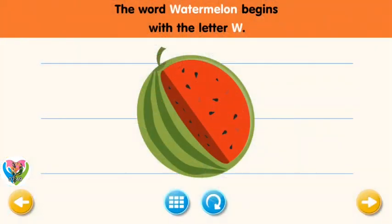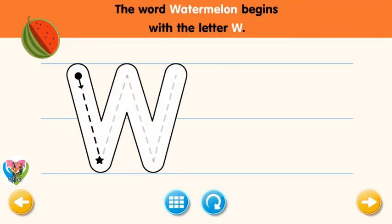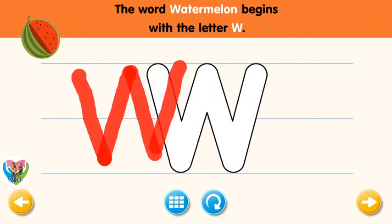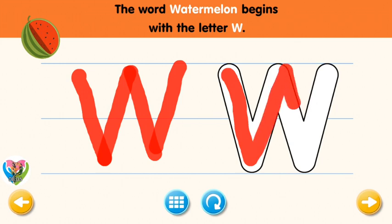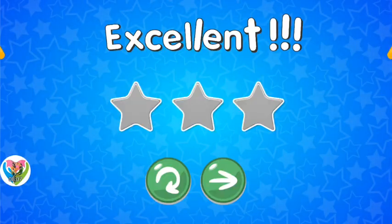The word watermelon begins with the letter W. Trace the letter W. Connect the dot and the star with a line. Excellent! Now write the letter W yourself. Excellent!